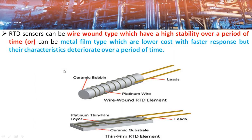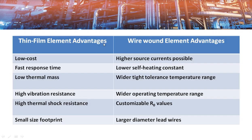We have seen the classification of RTDs based on material of construction. Now, looking at RTD sensor classification based on construction, they are classified as wire wound type and thin film type. Wire wound RTDs are used in applications requiring high stability and low self-heating effect, whereas thin film RTDs are used in applications requiring faster response and low cost. The table shown here summarizes the advantages of each type.